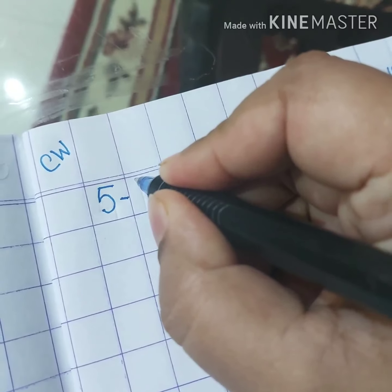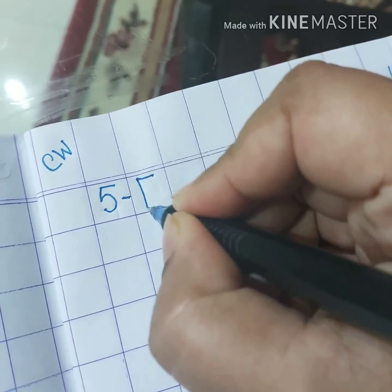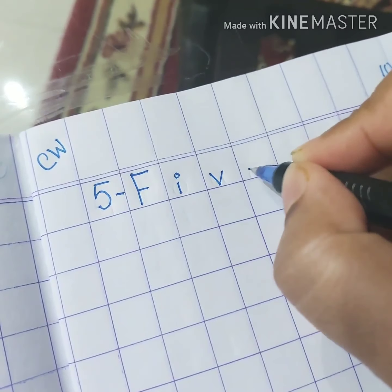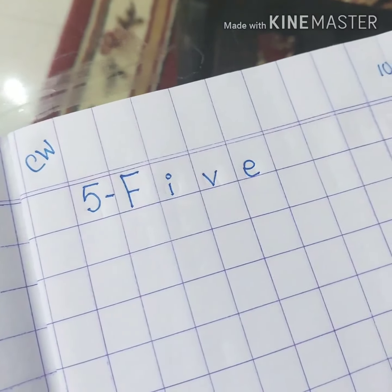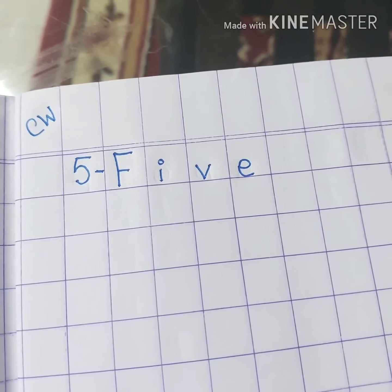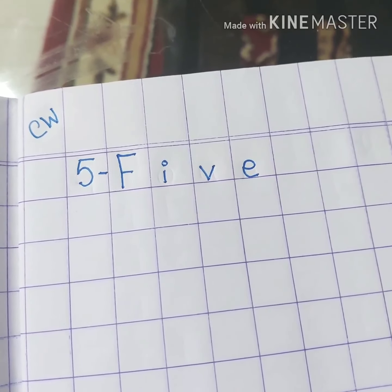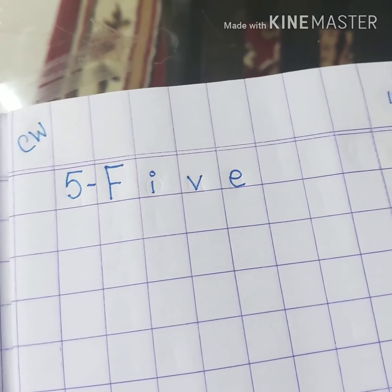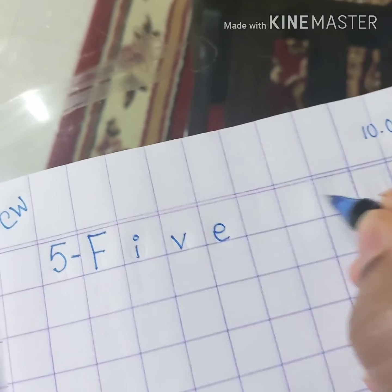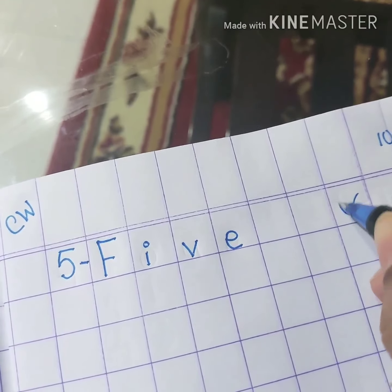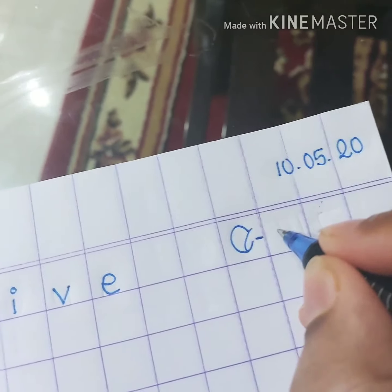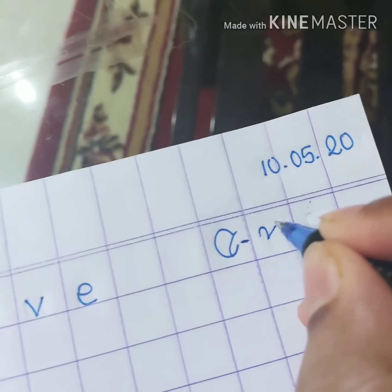Look at this — if I see, it's 5. Now I am going to write the spelling. First I write 5 and then the spelling.